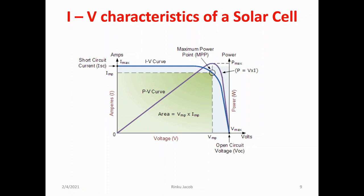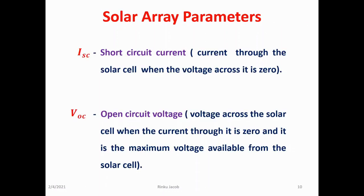The corresponding values of VMP and IMP can be estimated from the open circuit voltage and the short circuit current. Since solar cell output voltage and current both depend on temperature, the actual output power will vary with changes in the ambient temperature. Solar cell IV characteristic curves that summarize the relationship between the current and voltage are generally provided by the panel's manufacturer, and these are called solar array parameters.